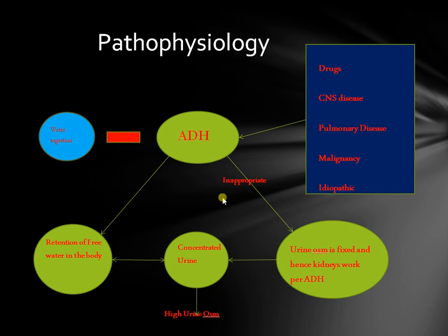When inappropriate ADH secretion occurs, the causes include strokes, CNS diseases, pulmonary diseases, malignancies, and idiopathic causes — we will cover these in subsequent slides. Under these circumstances, ADH is secreted irrespective of volume status, so even if the patient is euvolemic, ADH is secreted and tells the kidneys to hold on to water.